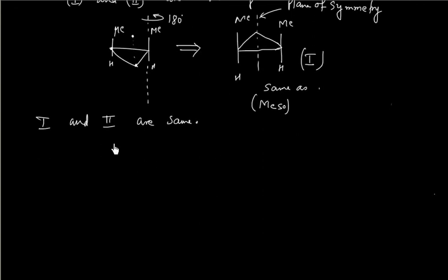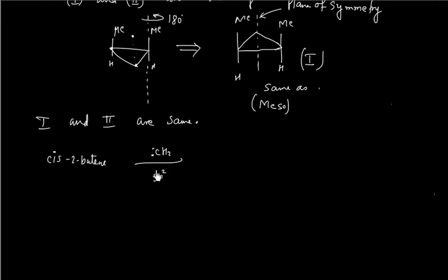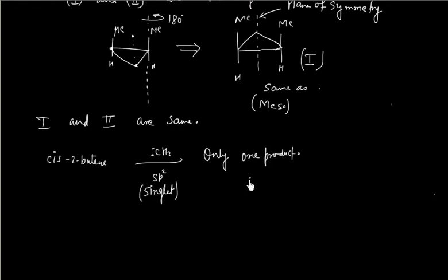So, if we have cis-2-butene and add singlet carbene (sp2, singlet carbene), we get only one product, and that product is meso — not optically active.